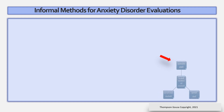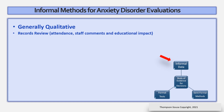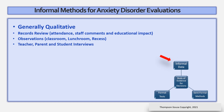The next leg of the assessment triad is the informal data area. Informal data is generally qualitative in nature, but very important for an anxiety disorder evaluation. One source of information is a records review. When examining a student's file, determine if the student has missed school due to anxiety issues, and look for staff comments and whether there is educational impact due to anxiety. Another source of information is observations in the classroom, the lunchroom, and at recess. Teacher, parent, and student interviews are also key to determining if anxiety plays a major role in a student's progress at school.